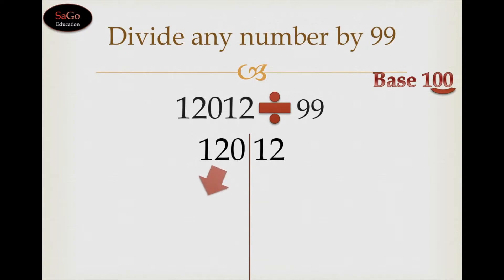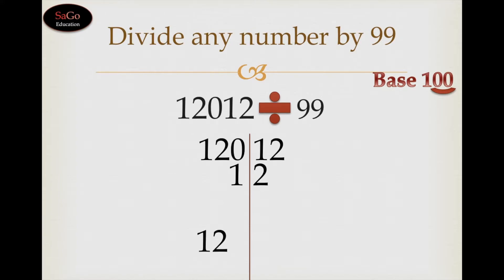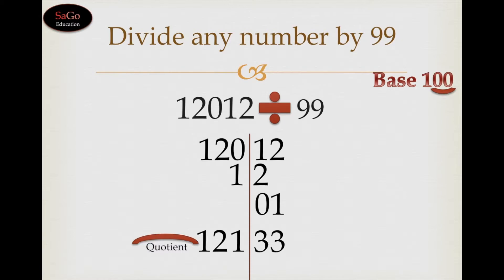The very first step is to write down the first two digits as it is, which is 12. This 12 would be written under the next two digits, which is 01. We would add only one digit: 0 plus 1 is 1. Write down 1. This 1 would be added under the next two digits, which is 12. But 1 is a single digit, so we prefix a 0 before it and write 01. Now we add: 1 plus 2 plus 0 is 3, and 2 plus 1 is 3.